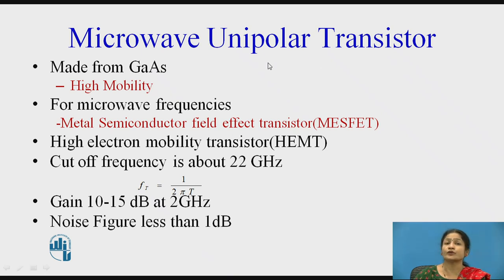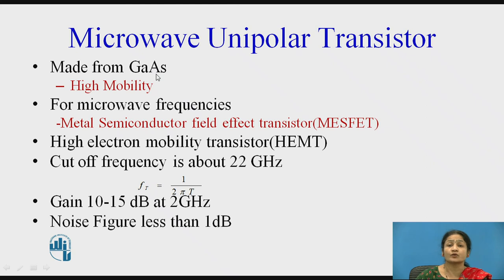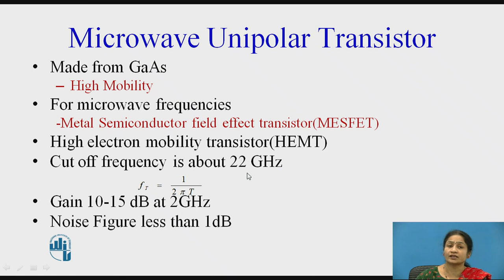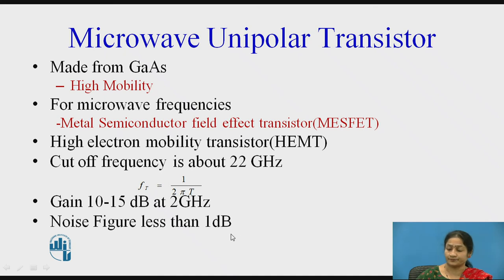The next topic is the microwave unipolar transistor. The microwave unipolar transistor has a single gate and is made of gallium arsenide. Gallium arsenide is used because it has high electron mobility compared to other semiconductor materials. Due to this high mobility, at microwave frequencies these devices are called Metal Semiconductor Field Effect Transistors (MESFET), and due to the high mobility they are also called High Electron Mobility Transistors (HEMT). The cutoff frequency is also 22 gigahertz, given by f_T = 1/τ. The gain of such transistors is in the range of 10 to 15 dB at 2 gigahertz and the noise figure is less than 1 dB.